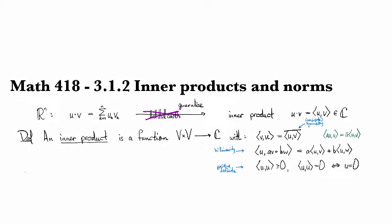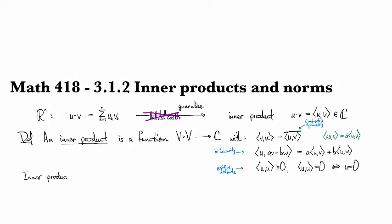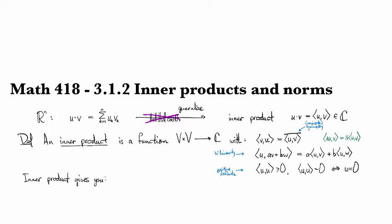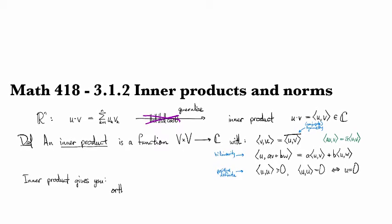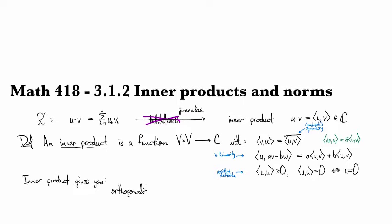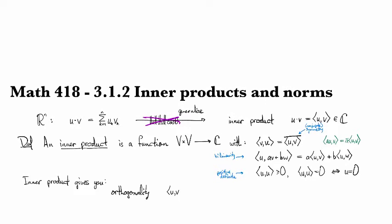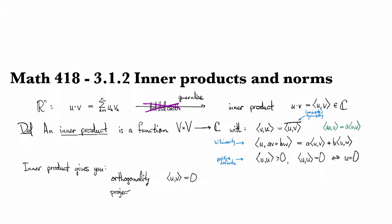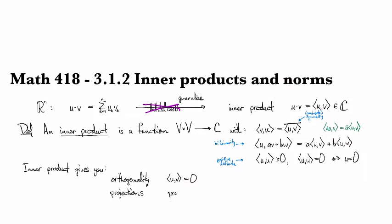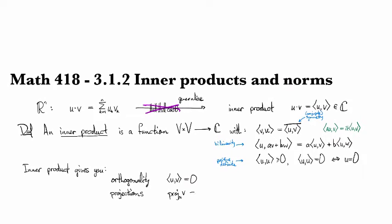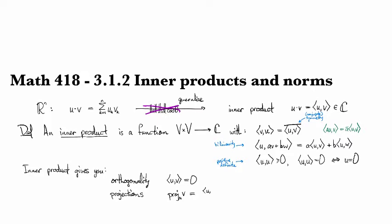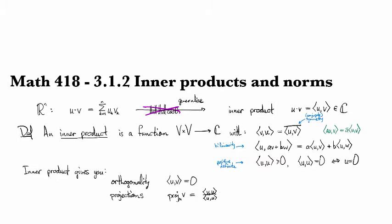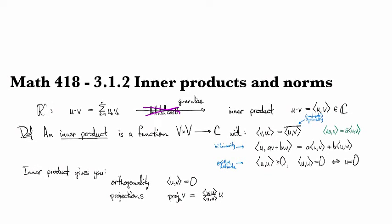So what do we do with an inner product? Why do we care about them? Well, it allows you to talk about a bunch of very useful concepts in a vector space. So for example, it gives you an idea of what orthogonality means. Orthogonality is defined by saying that the two things have an inner product of zero. It gives you a way to talk about projections. So the projection of V onto U is defined to be the inner product of V against U divided by the inner product of U against itself times U.